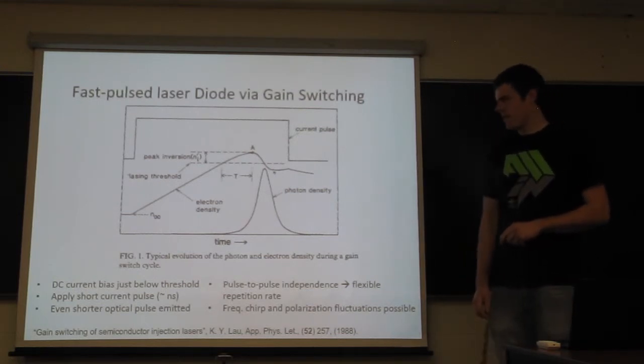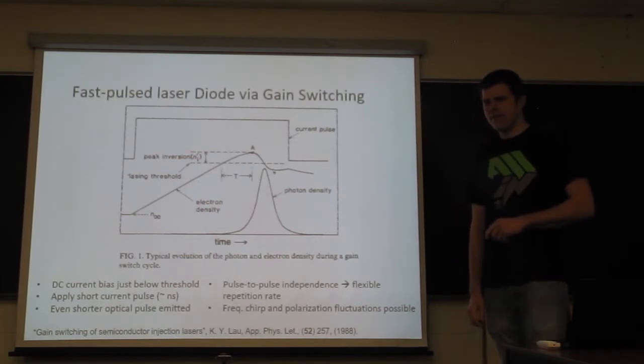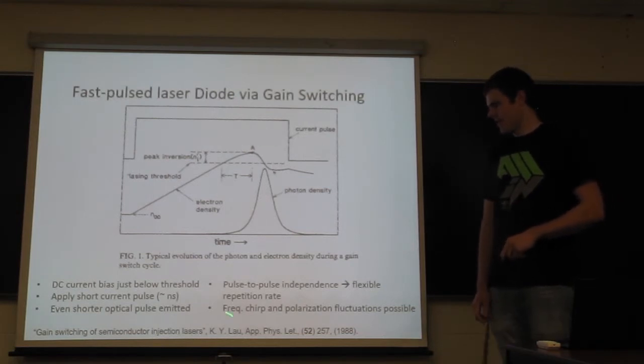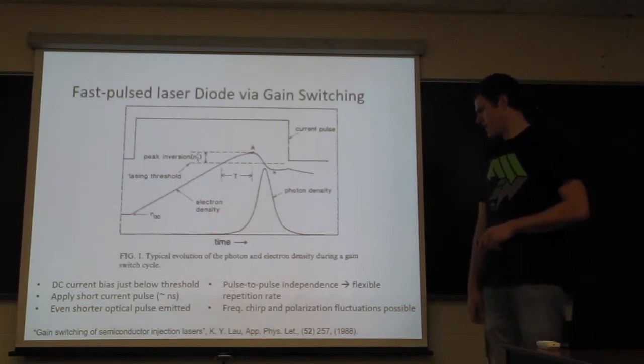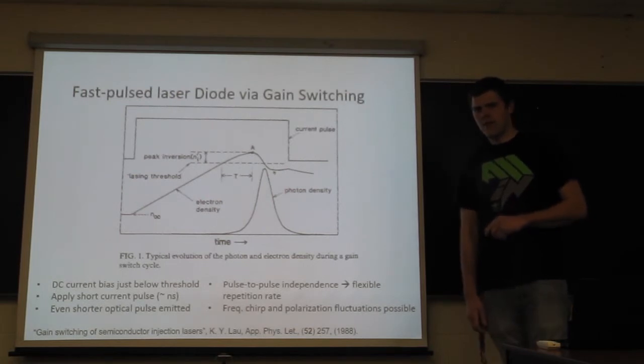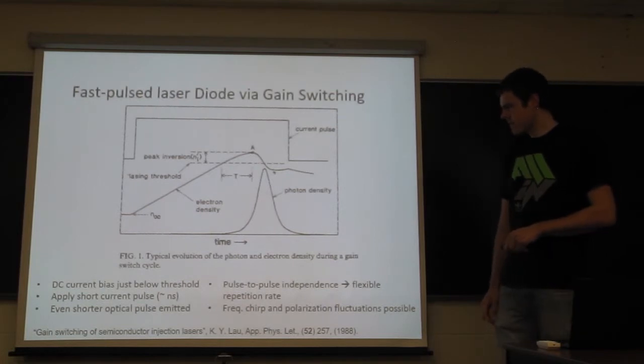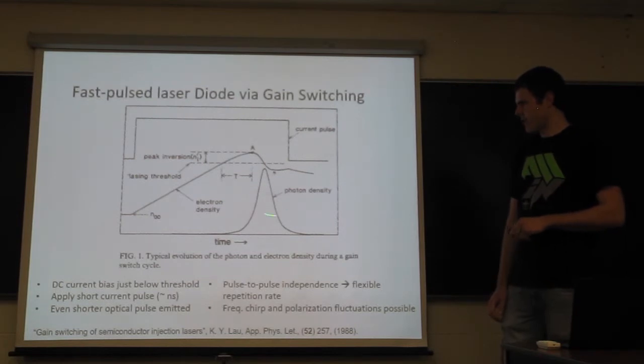If you want to learn more about the specific dynamics of the electron-hole pairs and the photons in such a laser while you're gain-switching, I refer you to this paper. Some things to notice. All of these pulses that you would create with a gain-switch laser are independent, so you're very flexible on the repetition rate. And the optical pulse is much shorter than the current pulse that you put in.